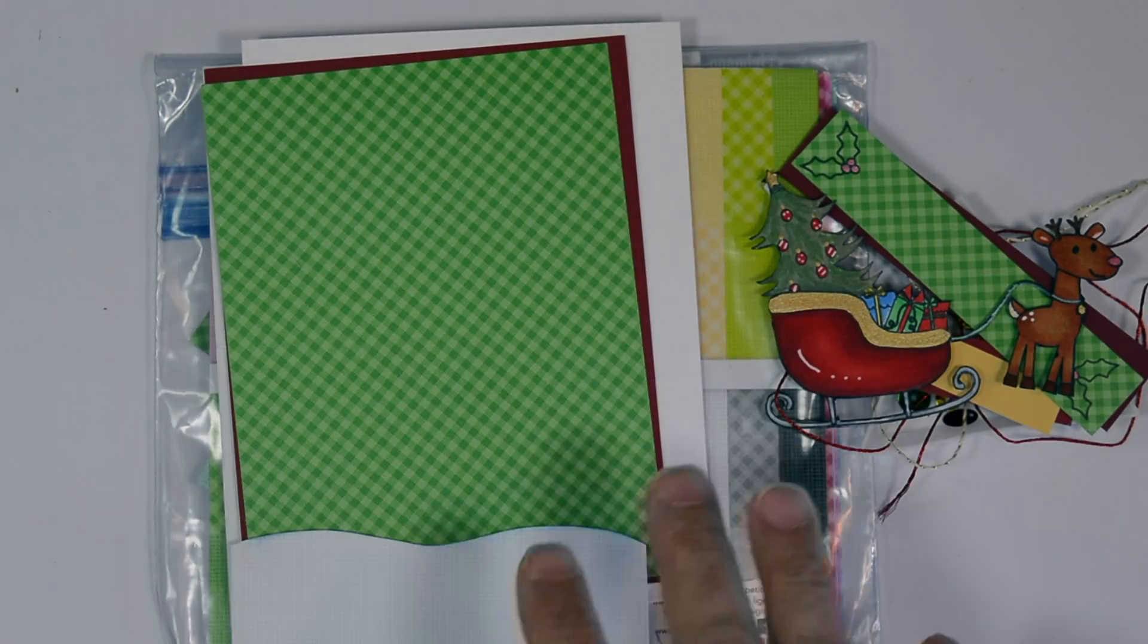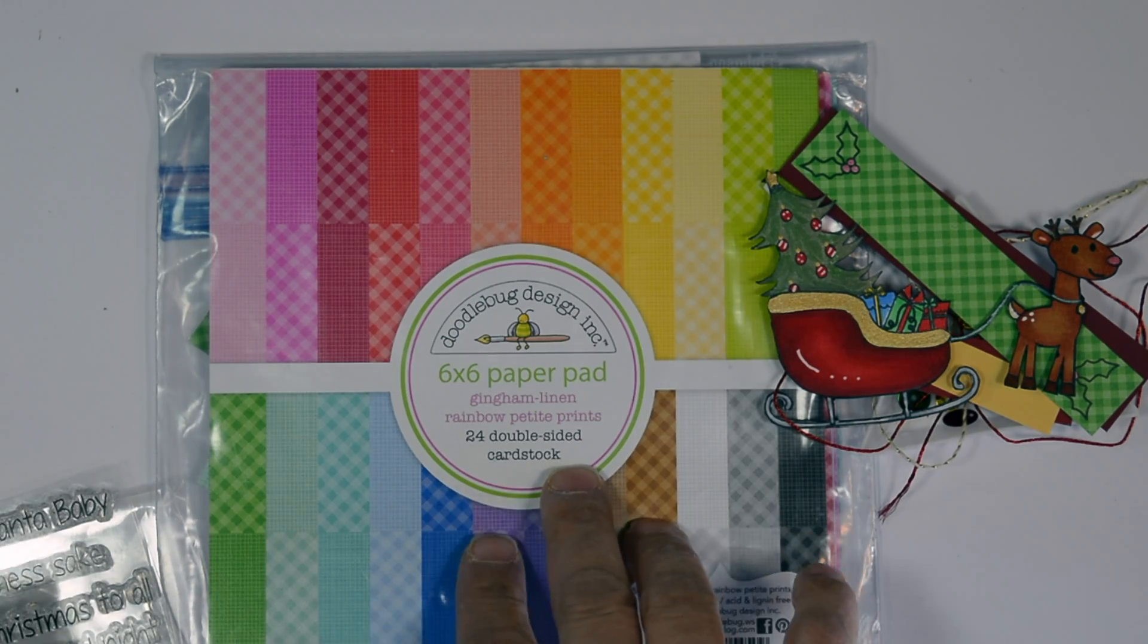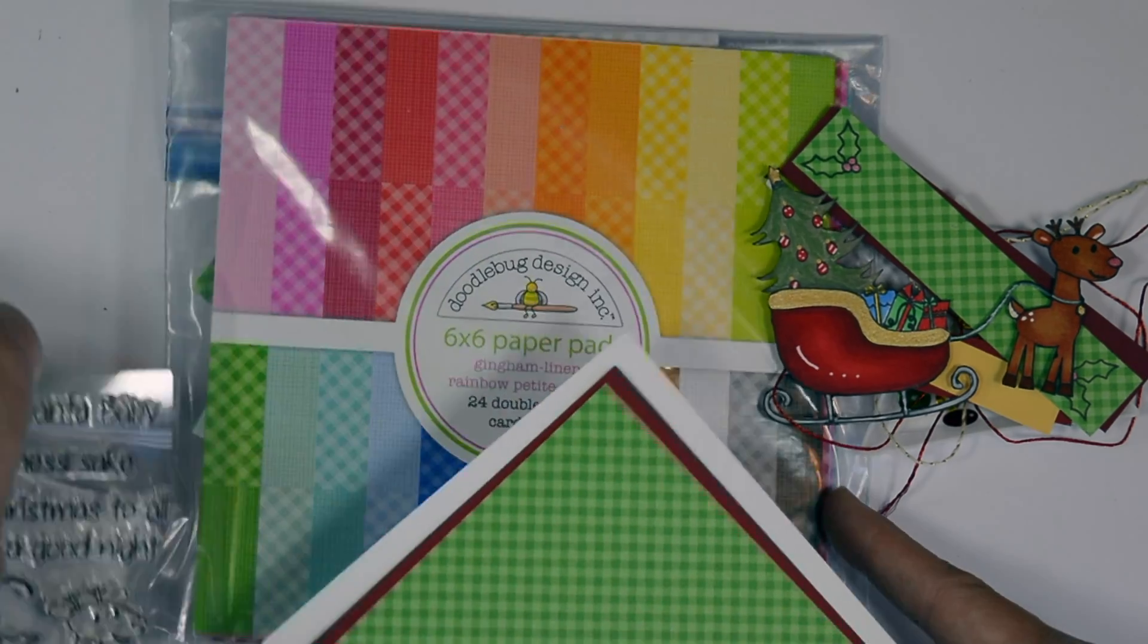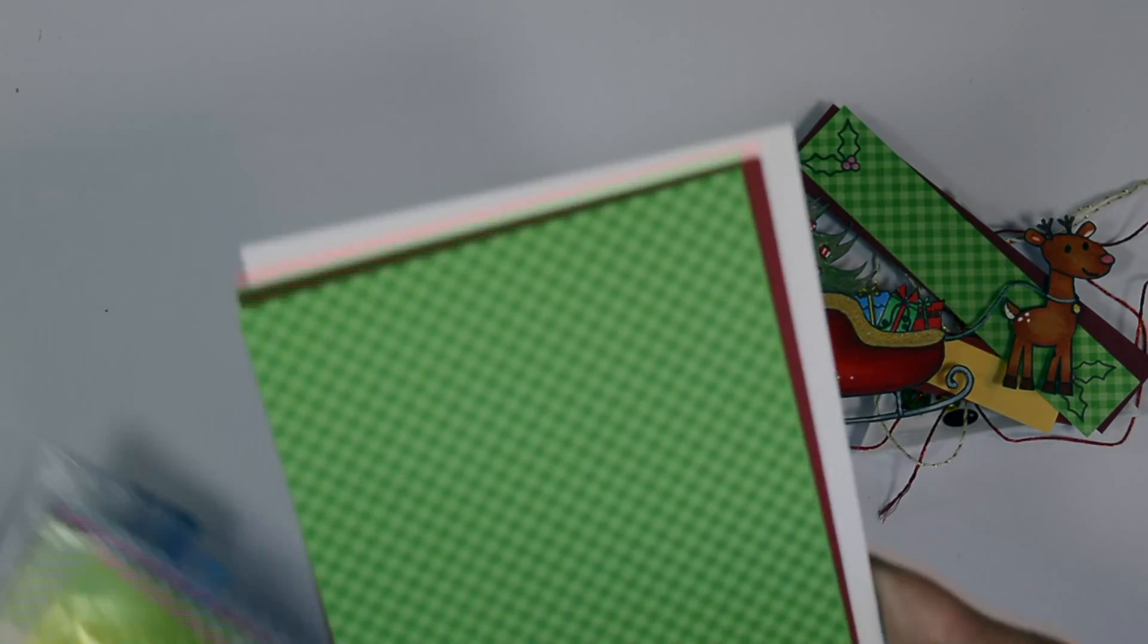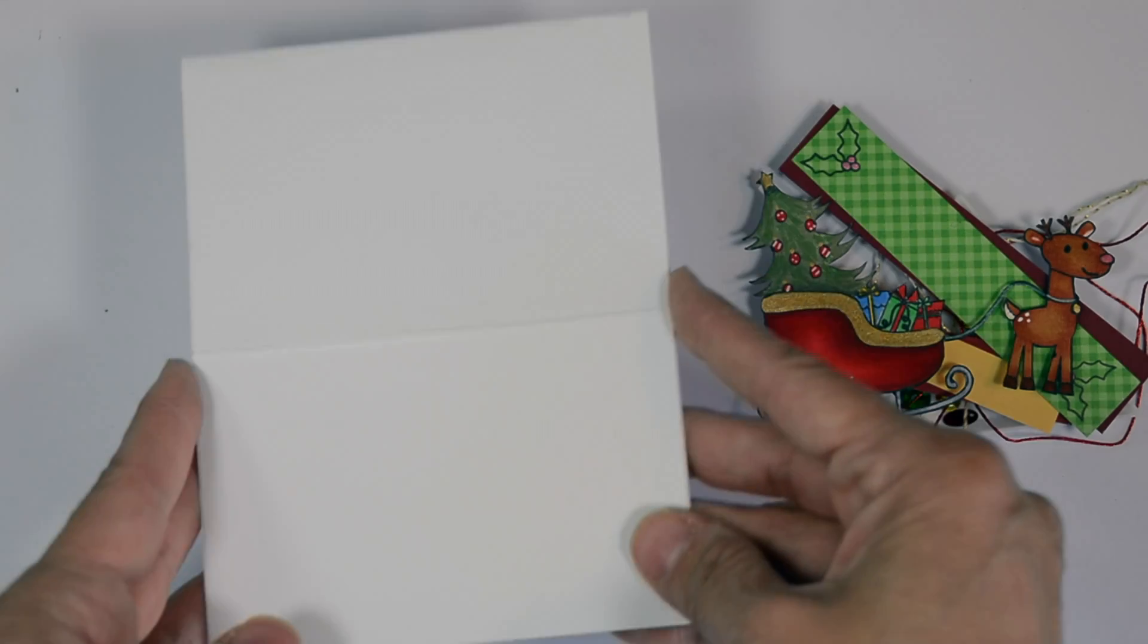I love this cute little reindeer. He's so adorable. Alright, we're also going to be bringing in the Fumdoodle Bugs designs the gingham and linen 6x6 paper pad.